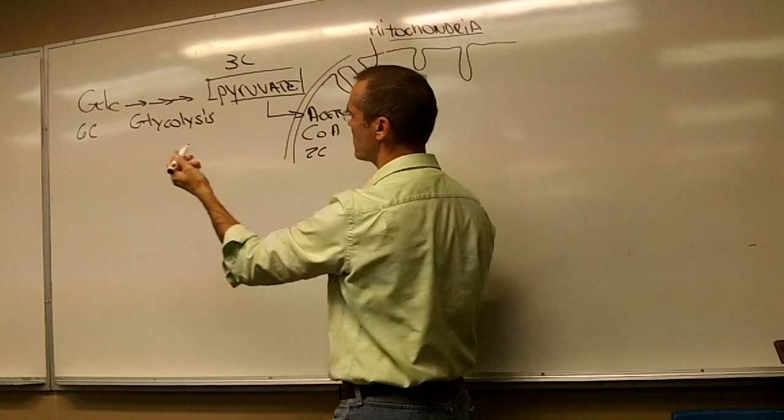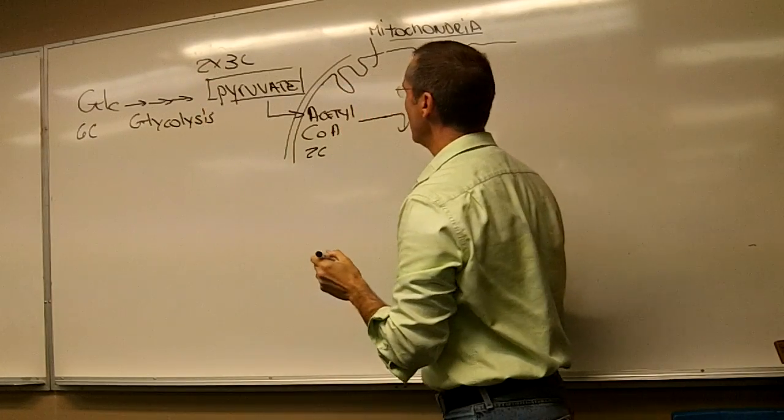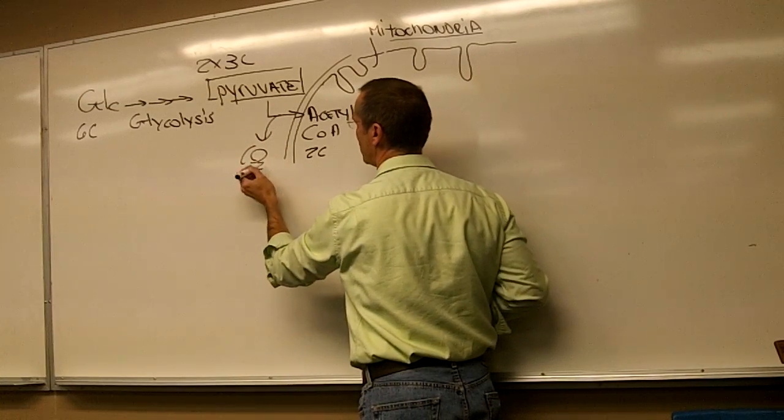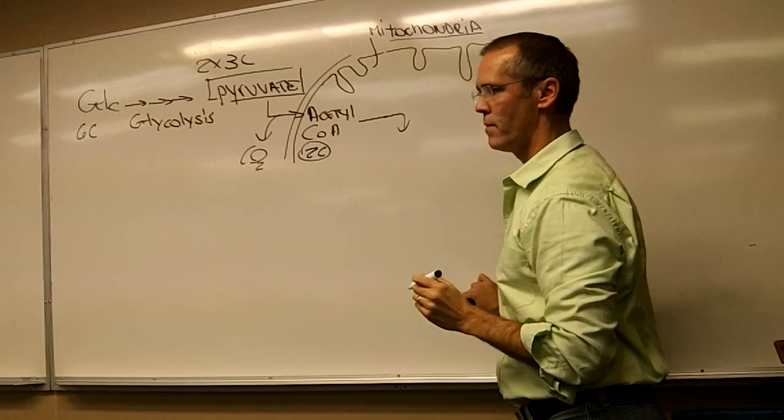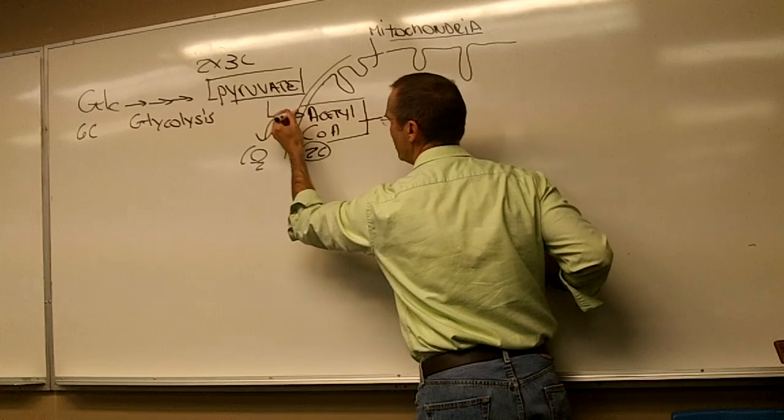So, of course, from six carbons in glycolysis, we produce two times three carbons. And then here, there is a carbon dioxide that gets liberated, so we end up with two carbons. This molecule, acetyl coenzyme A, is going to enter this cycle.